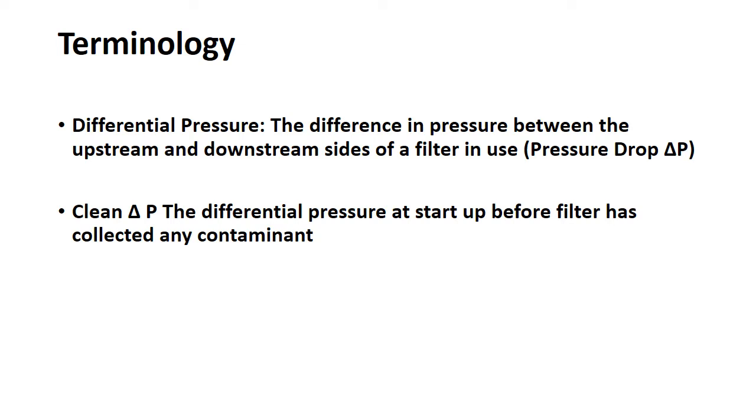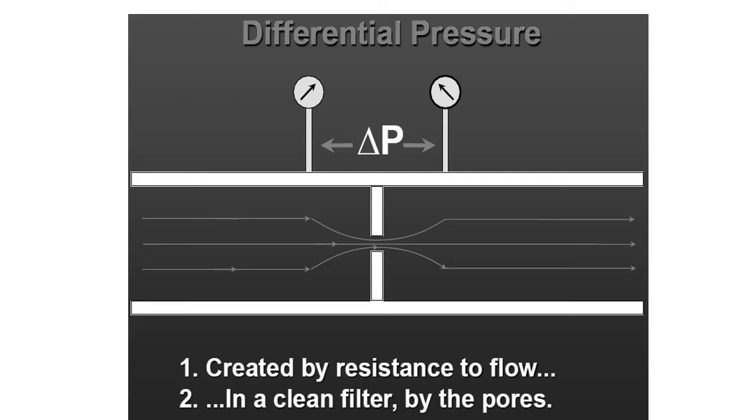I want to talk a little bit about differential pressure. This is the pressure between the upside and downside of the stream that's filtering use. We call this the differential pressure, or delta P. And this is what we want to look at before a filter has collected any contaminant. So the reason we want to look at this is that if we're running just water through a membrane filter, completely clean, sterile water, there should be no difference in the inlet pressure and the outlet pressure.